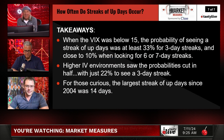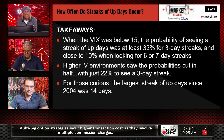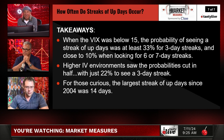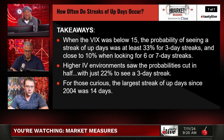Takeaways: when the VIX is below 15, the probability of seeing a streak of up days was at least 33% for three-day streaks and close to 10% when looking for six- or seven-day streaks. For higher IV environments, the probabilities were cut in half — just 22% to see a three-day streak and 2% to see a seven-day streak. For those curious, the largest streak of up days since 2004 was 14 days.